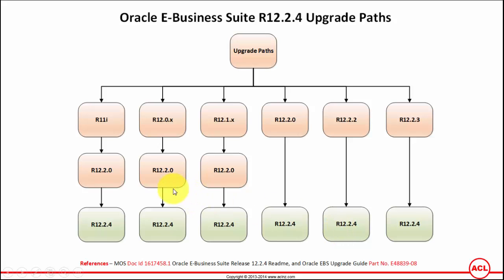You've got to remember that there are a lot of steps that go into the upgrade, so it's not as easy as it sounds. These are just upgrade paths, but you've got to apply a lot of prerequisite patches, upgrade your database, and then upgrade your application tier. If you are on release 12.1.x, you also need to upgrade the start CD version so you can use the Rapid Install Wizard to upgrade to 12.2.0 and then to 12.2.4. You've got to apply all those patches before you even start the upgrade process.